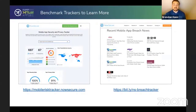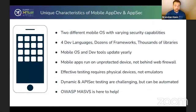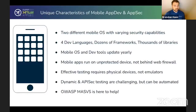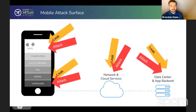Part of the problem is that there are very unique challenges to mobile AppSec and app development. There are two different mobile operating systems to consider — iOS and Android — with different languages, frameworks, and libraries. There are constant updates on protected devices, and testing requires physical devices, which makes it harder to test and requires sophisticated automation. The good news is you can rely on the OWASP MASVS to teach developers what they need to know about security and teach security teams what they need to test for.